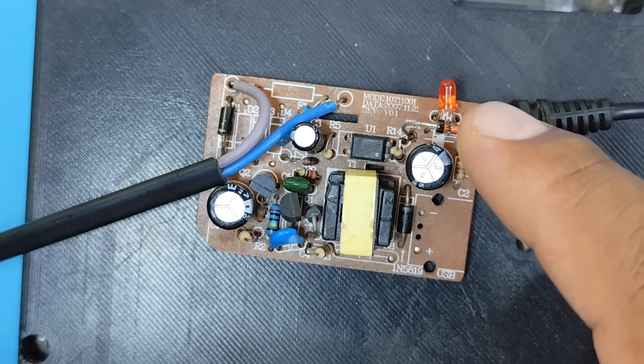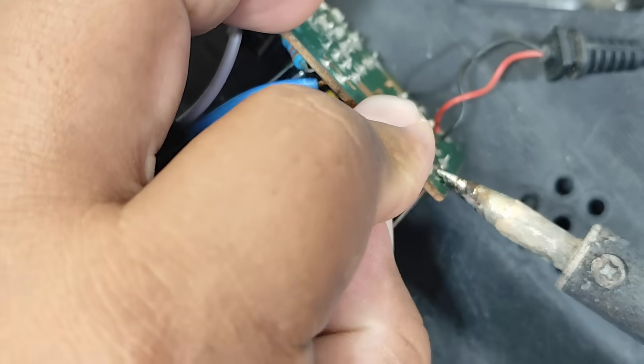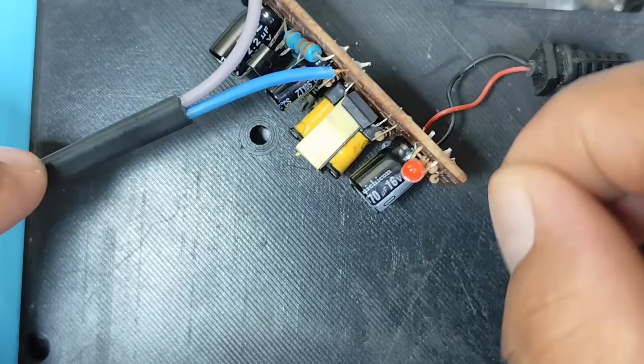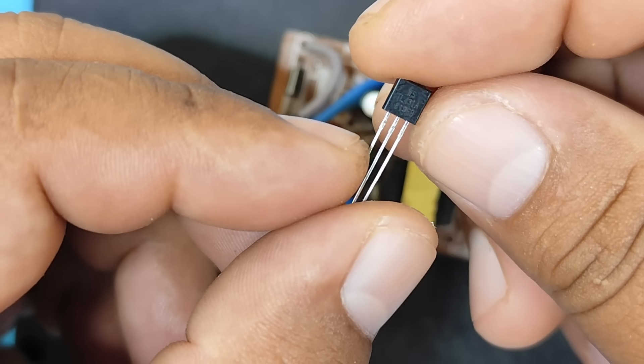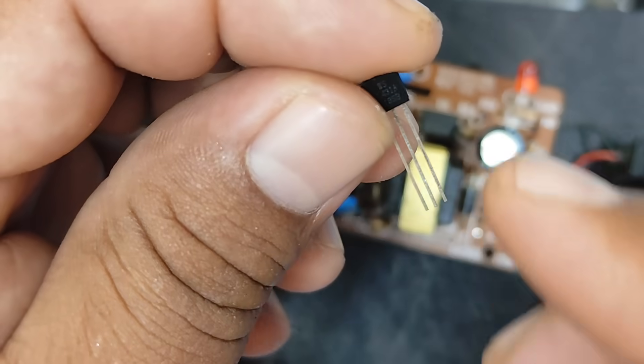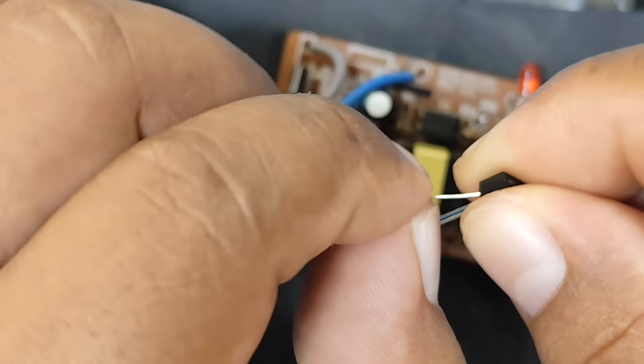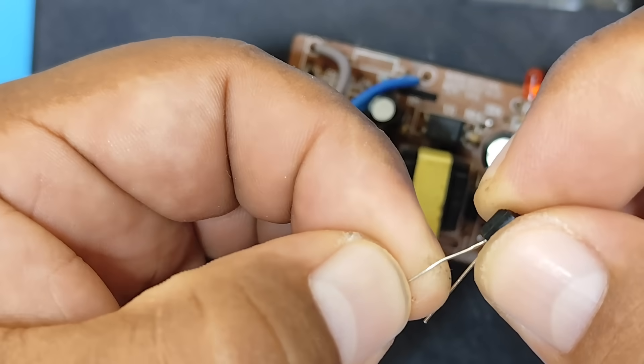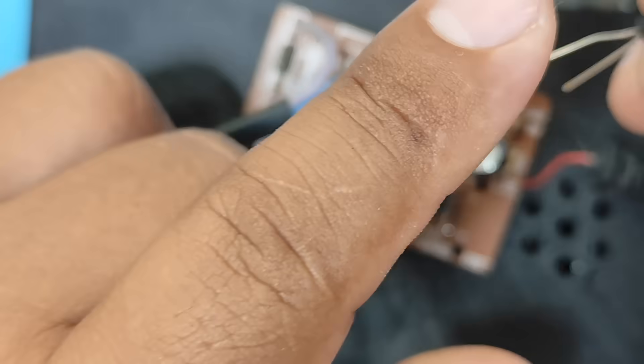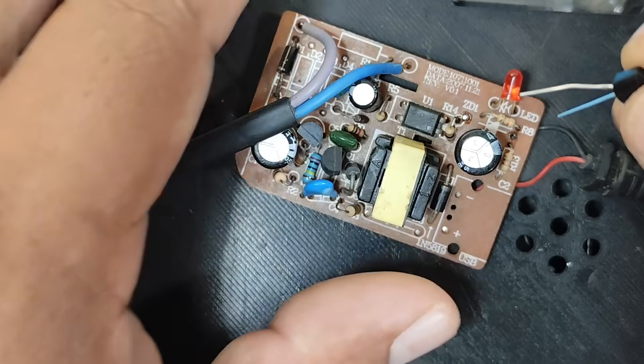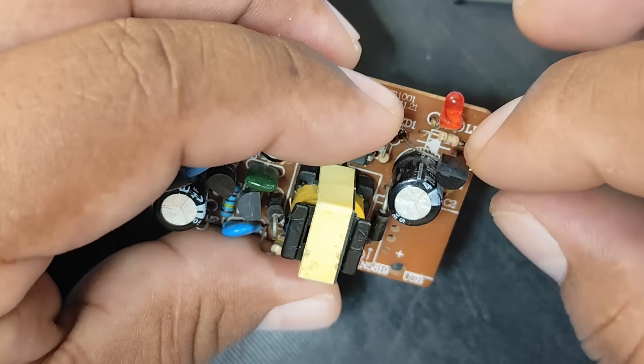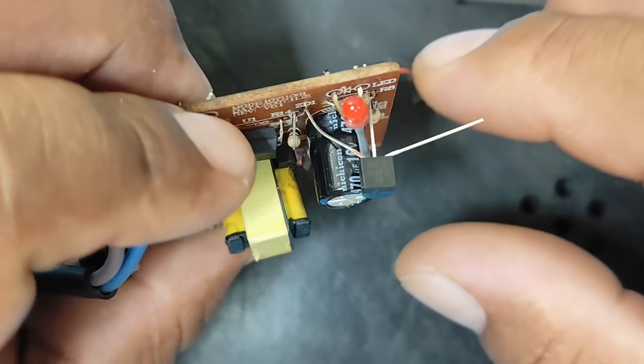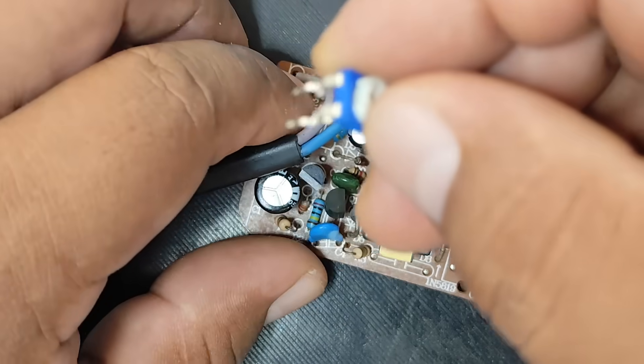First, we remove the Zener diode. Now we'll install the TL431. Pin 1 reference, Pin 2 anode, Pin 3 cathode. We flip it over and bend the pins. This would be the cathode, and this would be the anode.